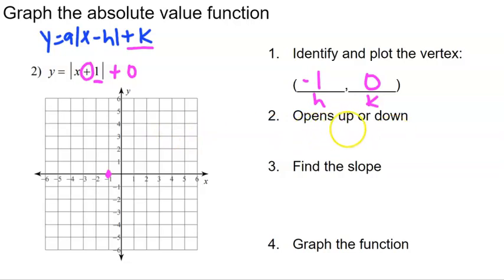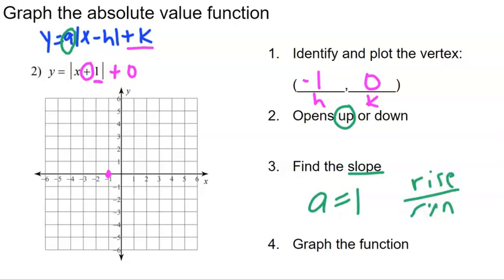We need to determine if it opens up or down, which depends on the A value. There is no A written, so A equals one, which is positive — it opens up. The slope is one, meaning rise over run is one over one. We go up one, over one from our vertex to get one side, then reverse it — up one, left one — to get the other side of our graph. That is how you graph an absolute value function using the standard form of the equation.